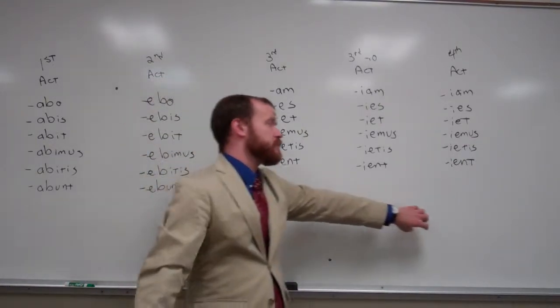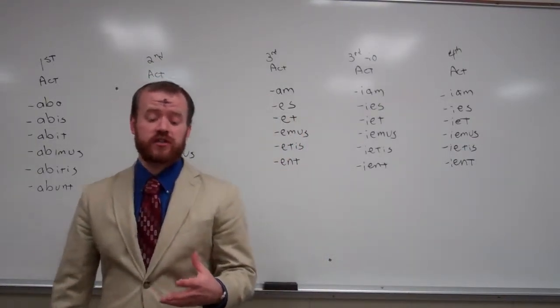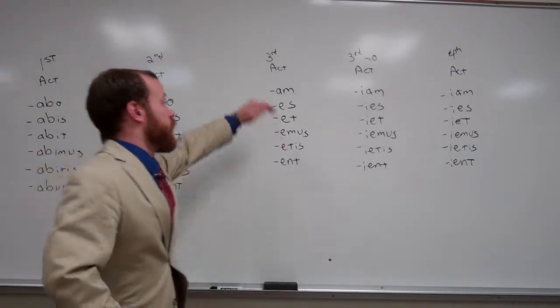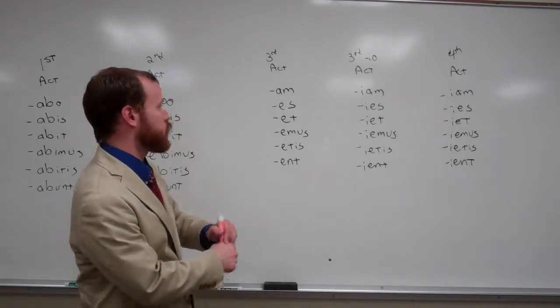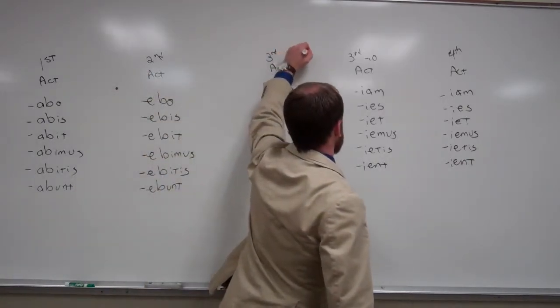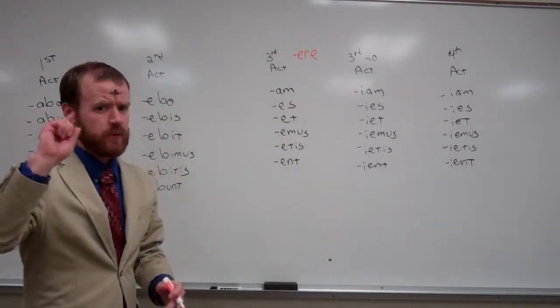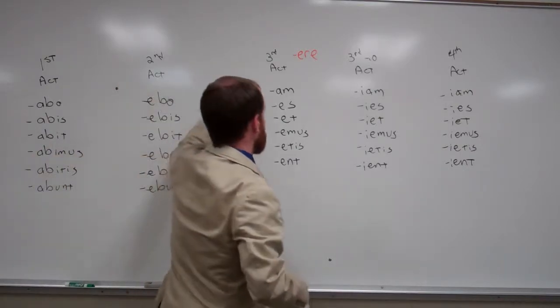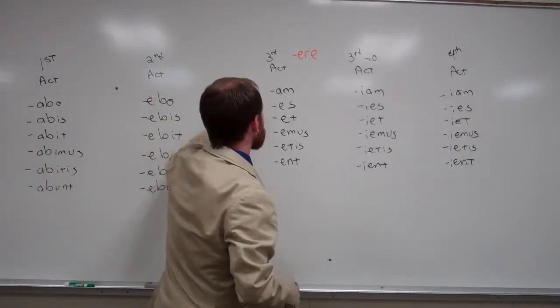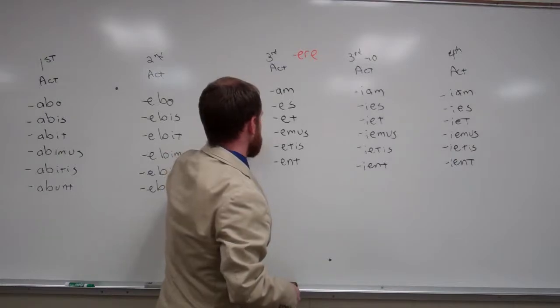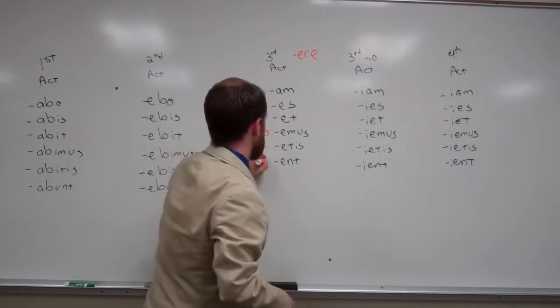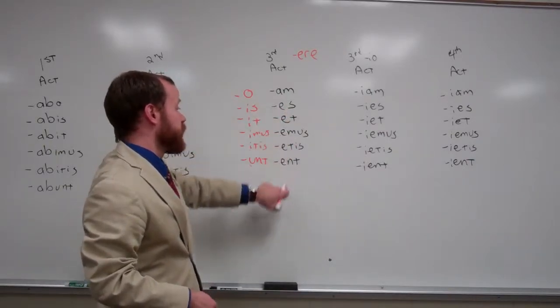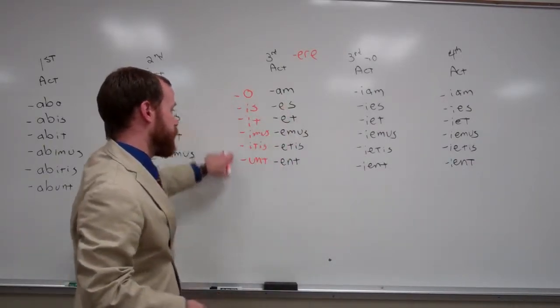With the third, third io's, and fourth, we just have a vowel change that lets us know. So we have am, eis, et, emus, etis, ent. And you're probably thinking, wait, doesn't third have the e, r, e? Well, it does, but you'll remember in the present, it goes o, is, it, emus, etis, unt. So here we just have these e's instead of i's.